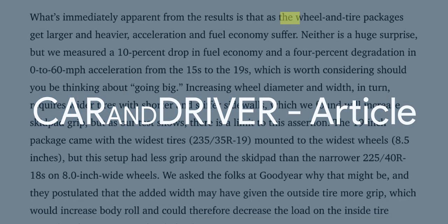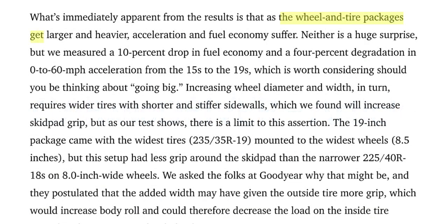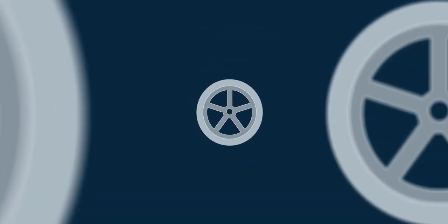One of such tests was done by Car and Driver a few years back, wherein a Volkswagen Golf with 15-inch wheels accelerated from 0 to 100 km/h in 7.6 seconds, which was 0.3 seconds faster than the same car with 19-inch wheels. So, not just torque, even wheel size matters for acceleration.